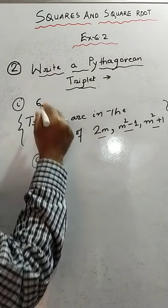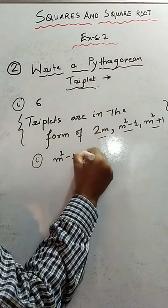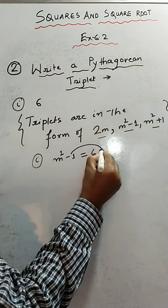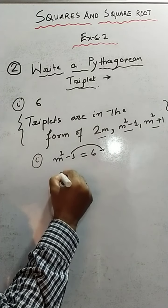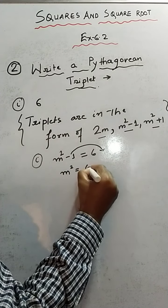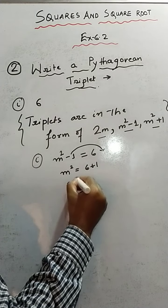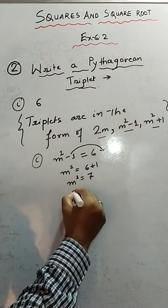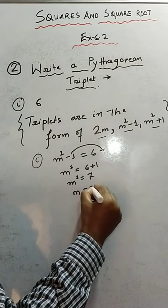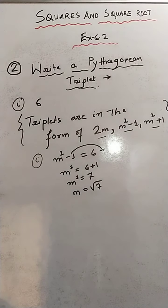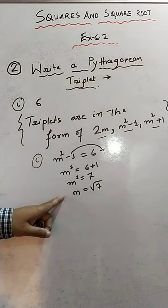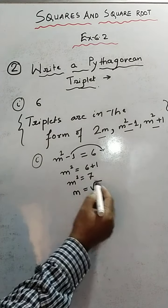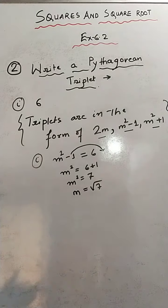Suppose we compare 6 with m²-1, setting it equal to 6. Transposing the 1, we get m² = 6+1 = 7, so m = √7. This is not an integer, so we cannot use this comparison.